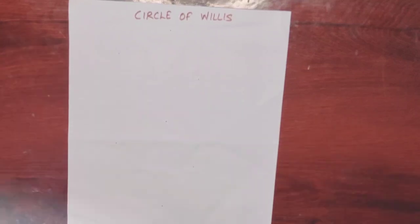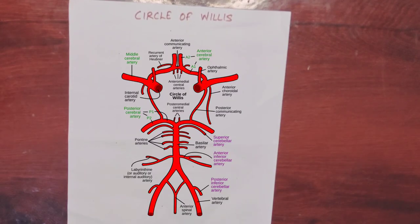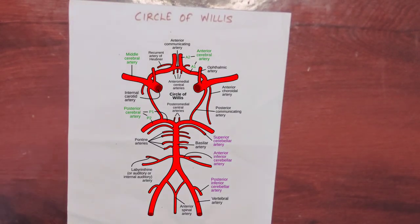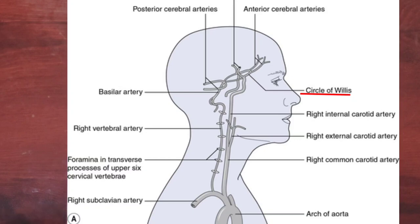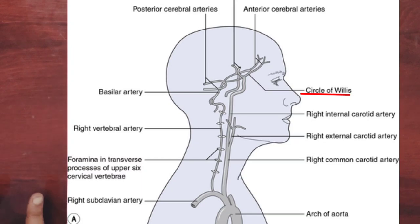Hello and welcome back to my channel. We will see the Circle of Willis in this video. The Circle of Willis is a group of arteries in a hexagon shape. That is what we call the Circle of Willis.